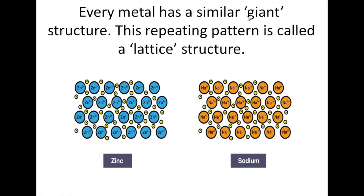Every metal has a similar giant structure. Giant structure just means that you've got lots of these metal ions in a repeating pattern, which is called a lattice structure. So whether you've got sodium or zinc, they're all in layers with electrons between them — it's a giant lattice structure.